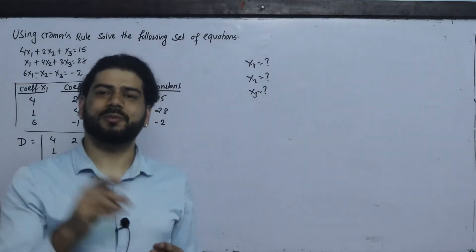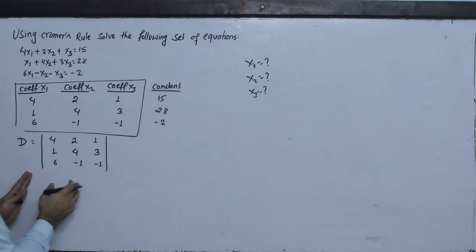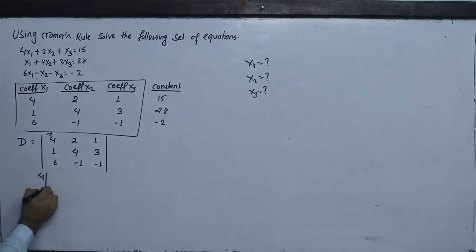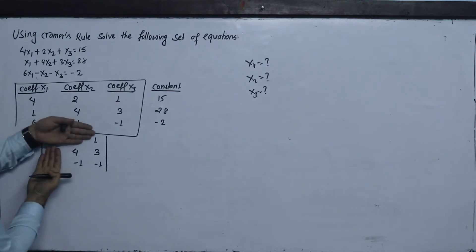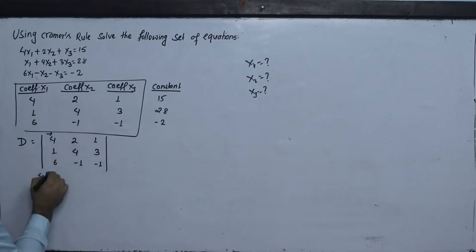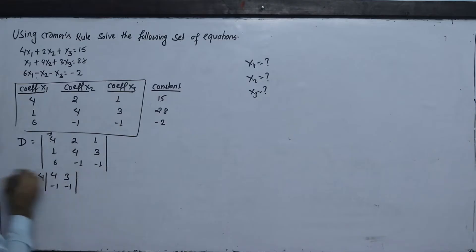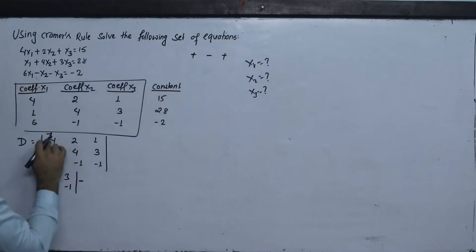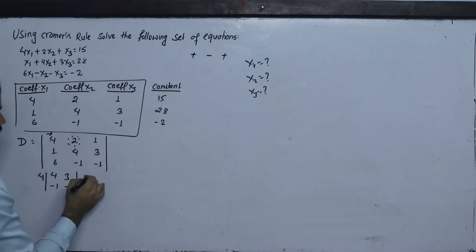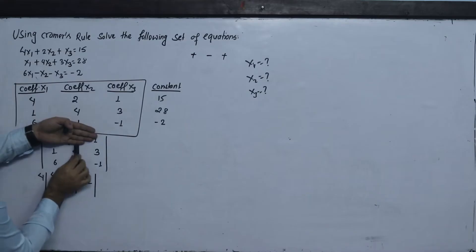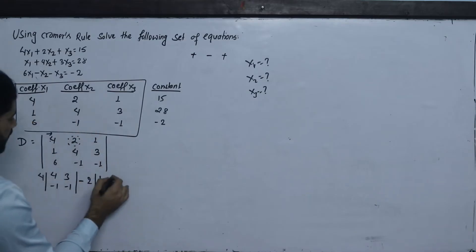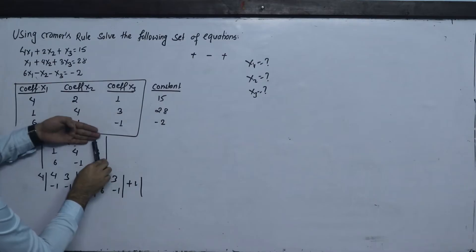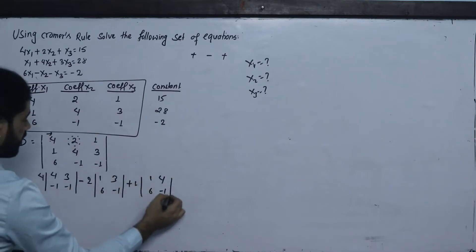Now let's do the determinant expansion technique. We expand along the first row. The 2x2 sub-determinant for the first element uses: row values 4, 3, minus 1, minus 1. The second element uses: 3, 6, minus 1.